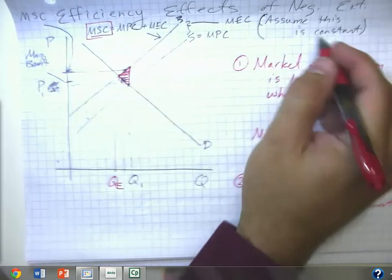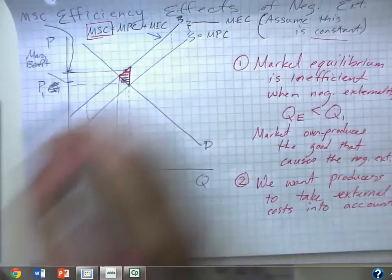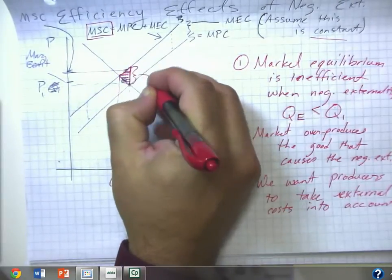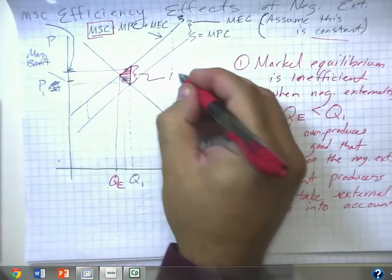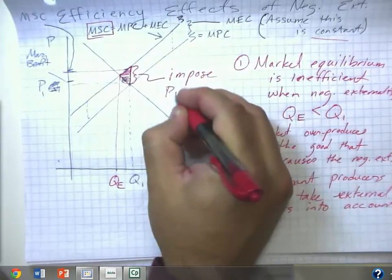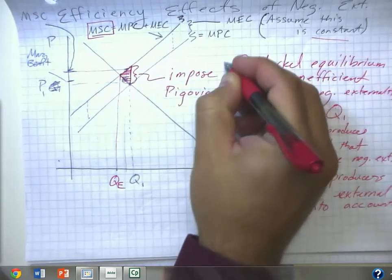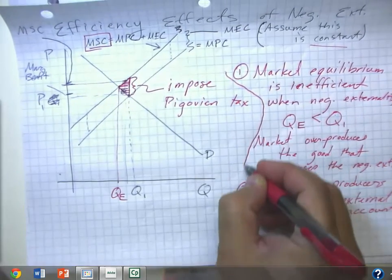So it turns out that the way to do this, one of the best ways to do this, if we have a sort of constant marginal external cost, is to impose what we call a Pigovian tax.